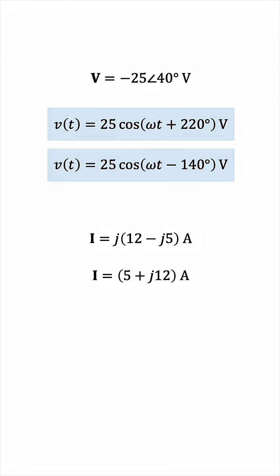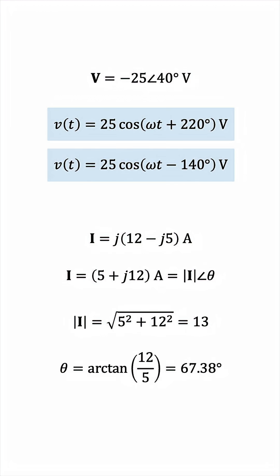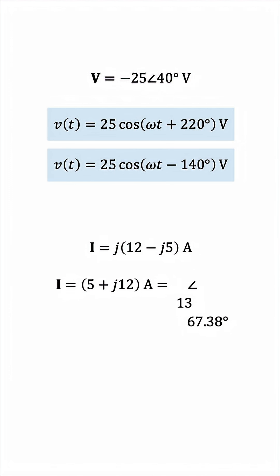And then we'll convert this into magnitude and phase by typical complex number analysis. The magnitude is the square root of 5 squared plus 12 squared, which is 13. And the phase is the inverse tangent of 12 over 5, which gives us 67.38 degrees.